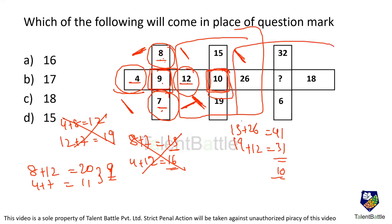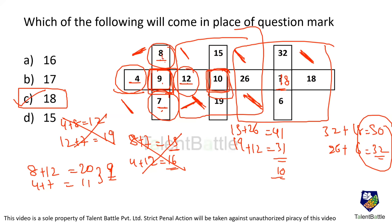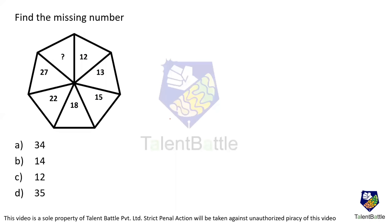Applying to the third grid: 32 plus 18 = 50, and 26 plus 6 = 32. The difference is 18, which matches option C. So first we checked opposite faces, then adjacent faces. The adjacent face difference gave us the answer. The answer for this question is option C.